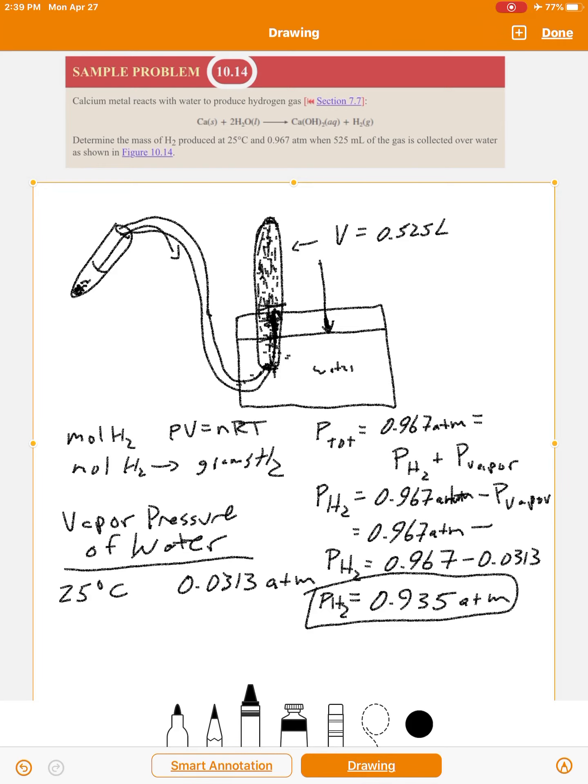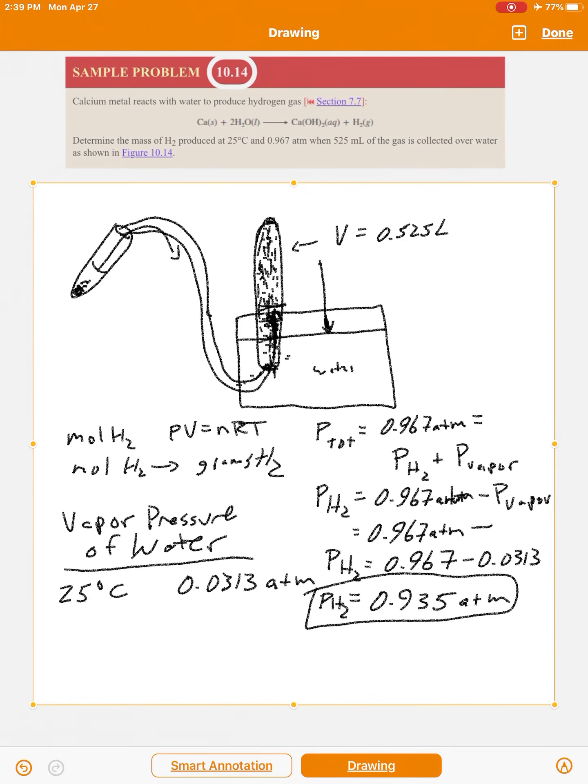Okay, so now that's the pressure you can use in the ideal gas law. Okay, so we want to find the mass of H2, so we want the moles of H2, PV over RT, right?